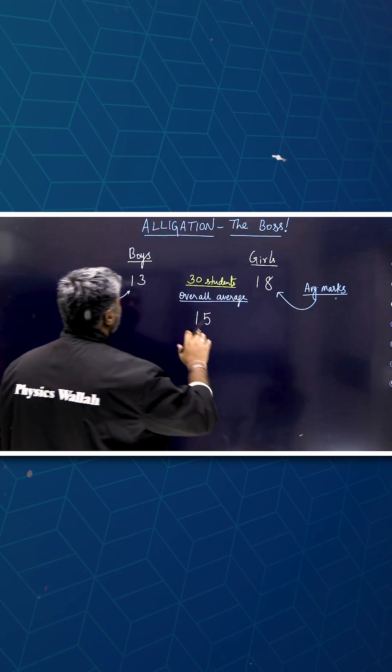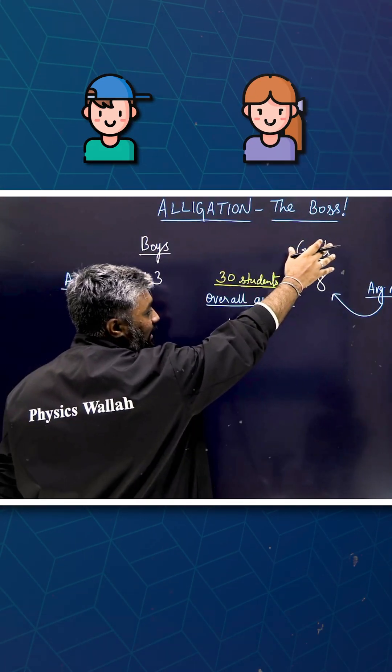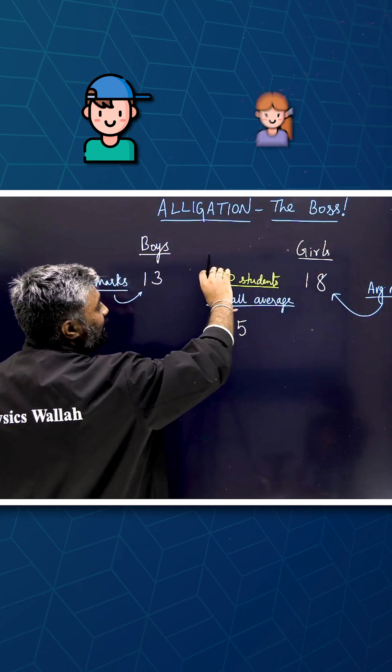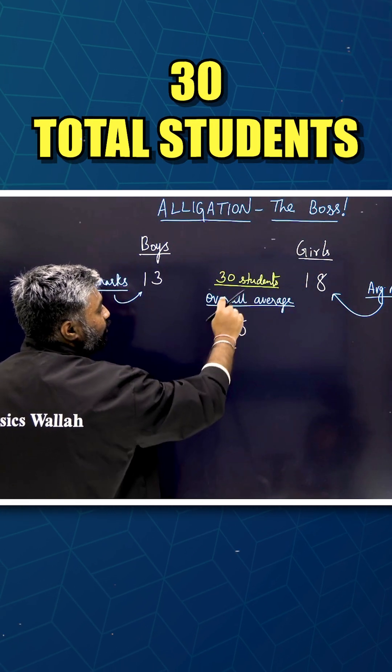So here is a situation where there are boys and girls in a class, we don't know how many. There are total 30 students and their overall average is given.